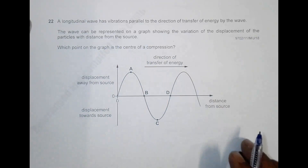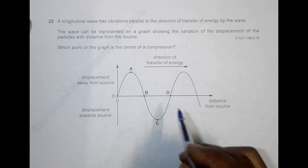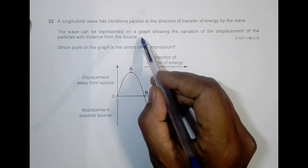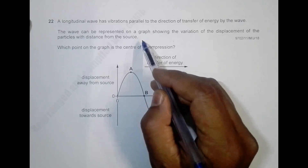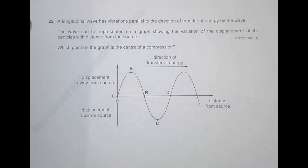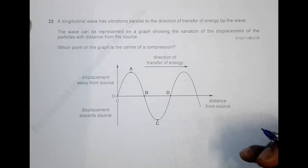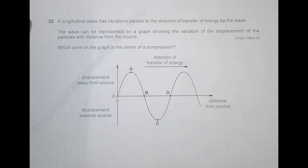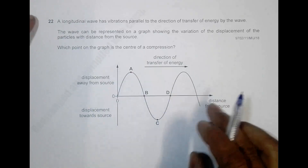One thing to remember is that whether the wave is longitudinal or transverse, the graph of displacement against time or distance from the source can be represented in the form of a sine wave. This is because the oscillation of the particles will be simple harmonic, and simple harmonic motion is always represented as a sine or cosine wave.